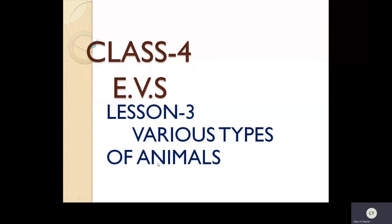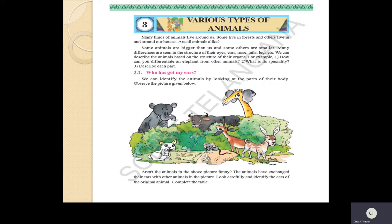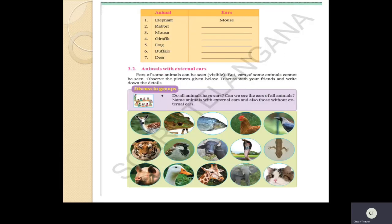Hello children, welcome to EVS class. In the previous class we were learning about lesson number three - various types of animals. We have seen different kinds of animals and studied about how we can identify animals based on their ears and skin. We studied about animals with external ears and animals without external ears. Animals which have external ears are viviparous - they can give direct birth to young ones.